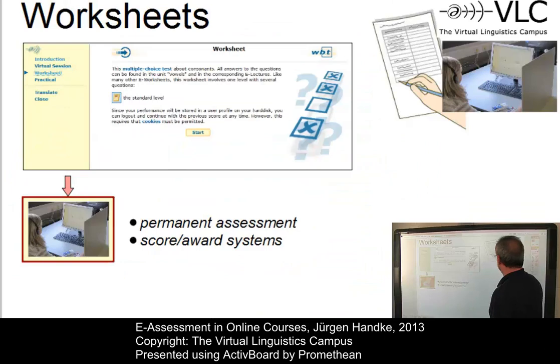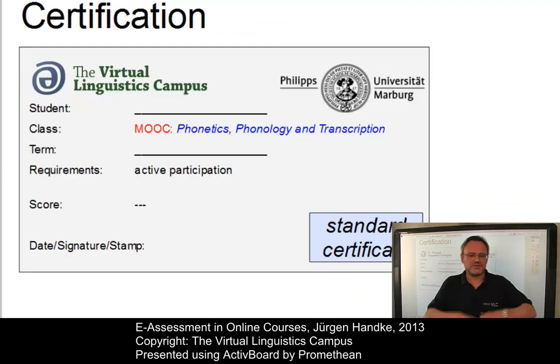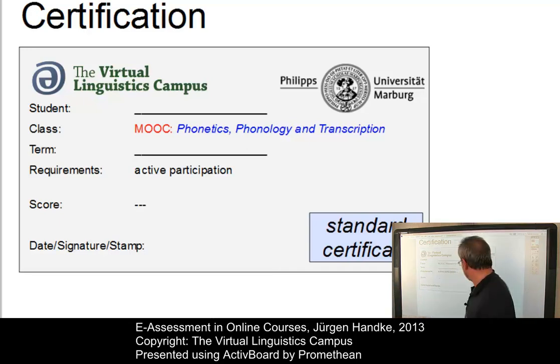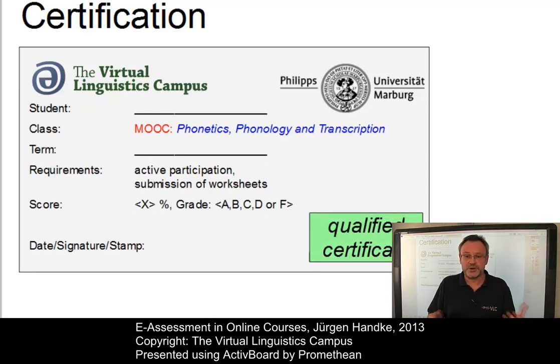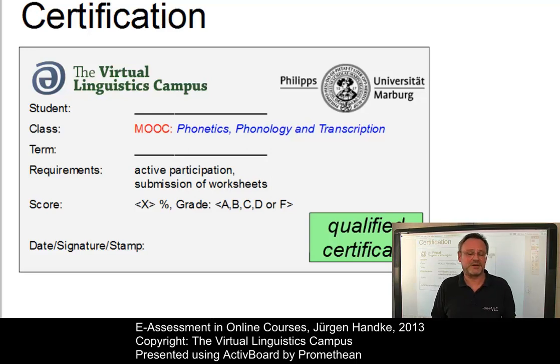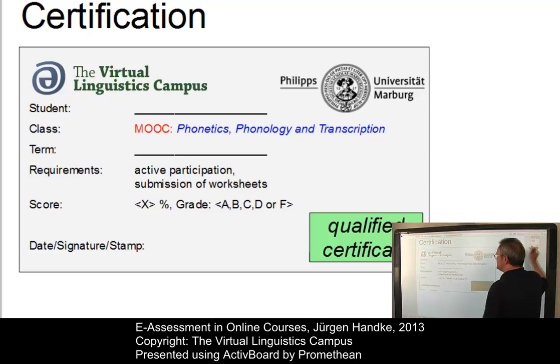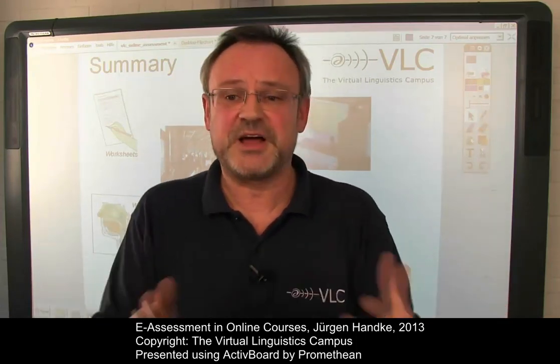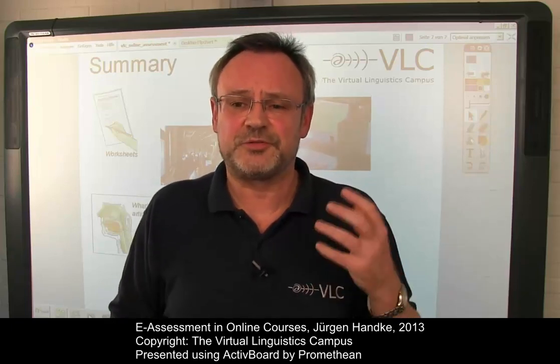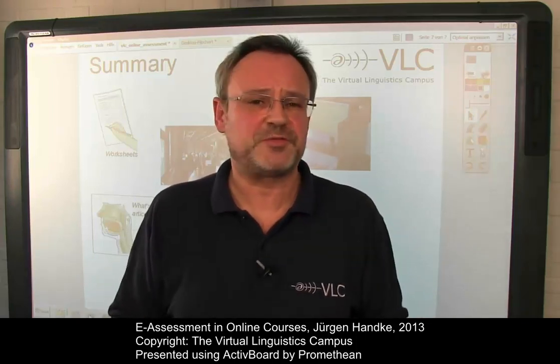This is how it works. In an online class, you have the choice: if you just want a standard certificate, active participation will do. However, if you want to be sent a qualified certificate, you have to reach a worksheet average score of 60% or more. Mine is currently 27%, so that's not good enough, but there are a number of worksheets for me to do. I hope I could demonstrate the mechanism of electronic testing in a VLC online class. The backbone of this approach is our system of worksheets — they involve a wealth of testing material, are evaluated and graded automatically, and give you the freedom and flexibility of doing them from wherever, whenever you want. Remember: we do not demonize failure. If you don't pass a worksheet straightforwardly, you can do it again as often as you like. Thank you.